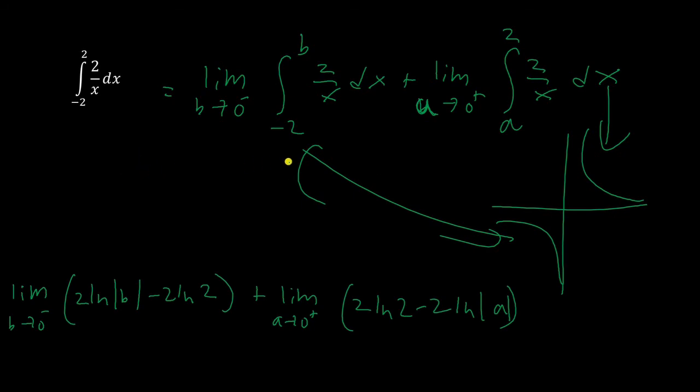So as b approaches 0, or as a approaches 0, what happens to the natural log function? Well, it approaches negative infinity. So that means our integral does not approach a finite number, and therefore it diverges. Although it looks like it converges, it actually does not.